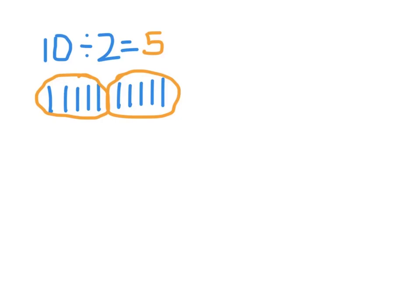So I'm going to make an array from this division problem and the first thing I look at is the divisor 2, and I'm going to say I have two rows and then I need to figure out how many columns I'll have when I have 10 circles. 4, 6, 8, 10. I now have 10 circles and I have 5 columns. So 5 times 2 equals 10 and 10 divided by 2 equals 5.